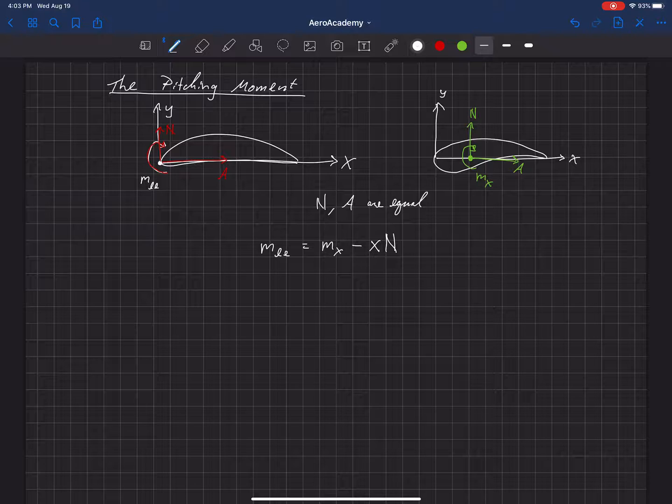So what this tells us is that, actually, if I know the moment at the leading edge, or if I know the moment at any location, I can just move that to any other location and figure out what the moment at another location is on that airfoil, if I know what these forces are. Now, we could have made this more complicated and included a Y offset, and it would include then some axial force, like moving the influence of the axial force just like we did the influence of the normal force.